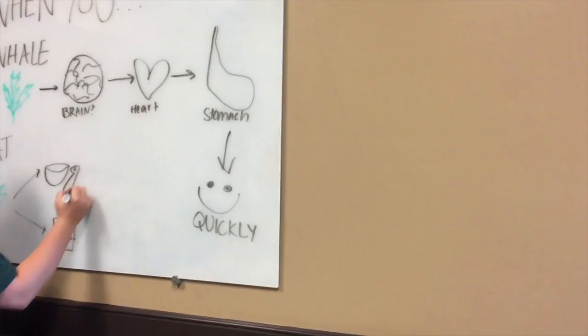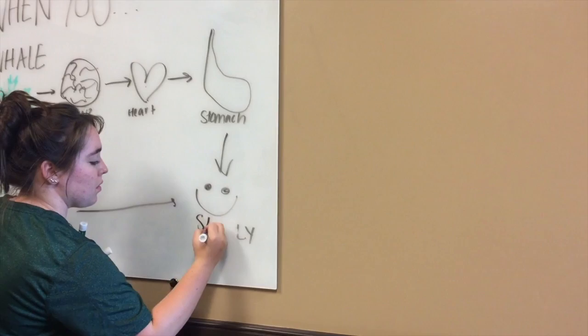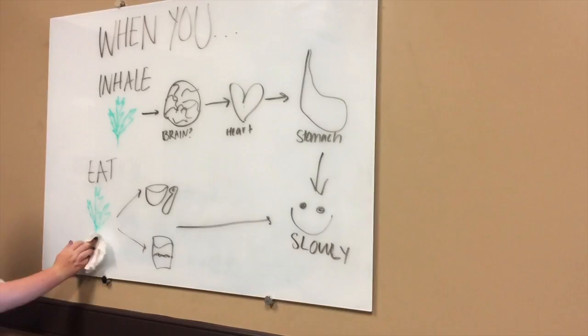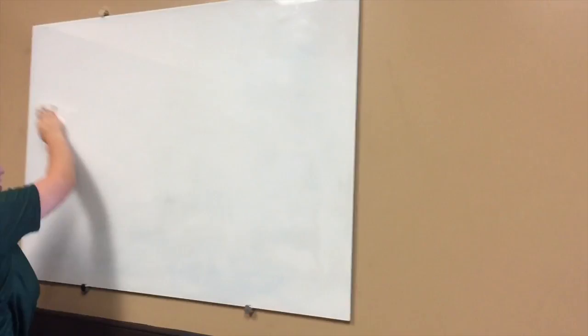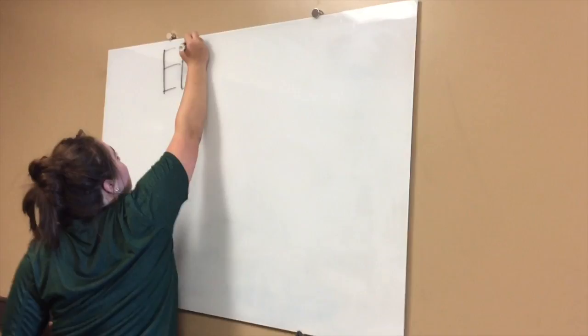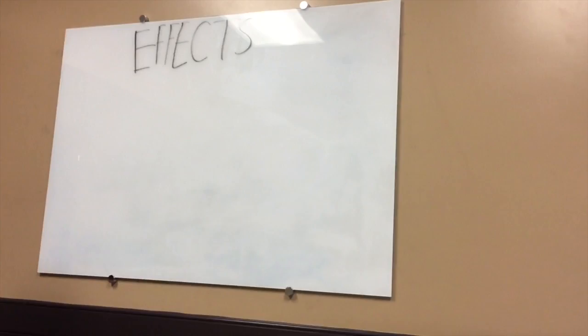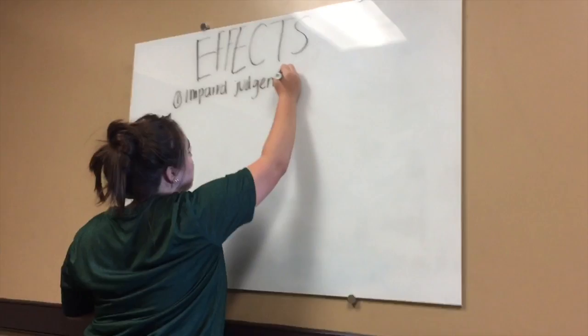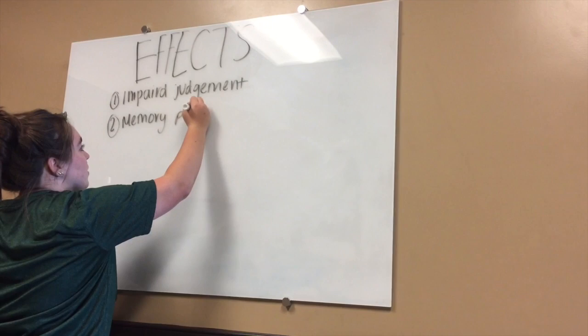But what really are the effects of marijuana? There are many good and bad things about marijuana. Bad things include: marijuana can impair your judgment, cause memory problems, create red eyes, accelerate your heartbeat, and slow your reaction time.